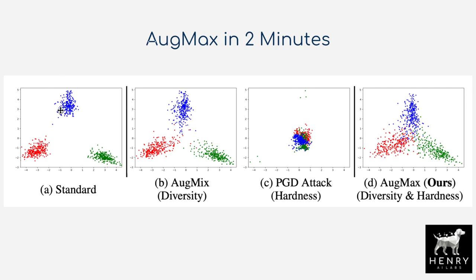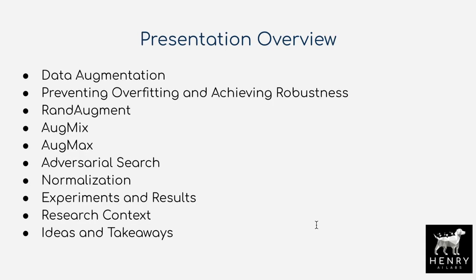Standard RandAugment training has disparate clusters with white space in the middle — a rotation suddenly places a point in unoccupied space, causing failure on out-of-distribution tests. Using diversity alone covers the distribution but misses the decision boundary. Naive adversarial attacking covers the decision boundary but sacrifices diversity. Augmax mixes both: diversity and coverage with adversarial boundary points, balancing coverage and hardness of individual examples.